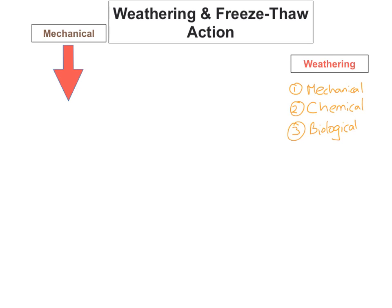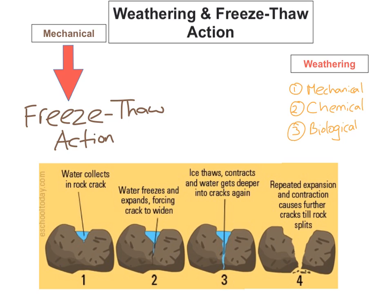The first thing we're going to look at is mechanical weathering, which is the breaking down of rocks into smaller pieces due to the sun or frost. The example we'll look at is freeze-thaw action, which is mechanical weathering caused by frost, and it's most evident in mountainous areas.